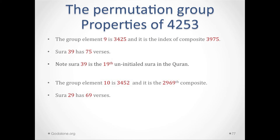Group element number 9 is 3425, and it is the index of composite 3975. Chapter 39 has 75 verses. Note that 39 is the 19th Mersenne prime exponent. Group element number 10 is 3452, and its index is 2969. Chapter 29 in the Quran has 69 verses.